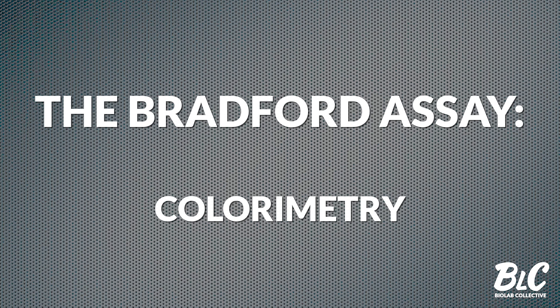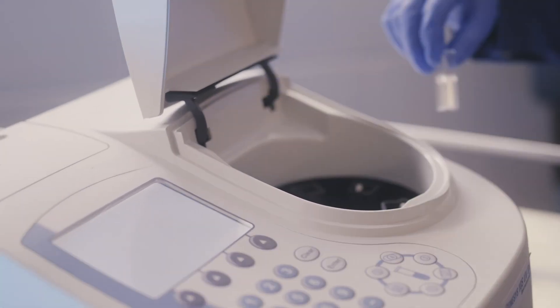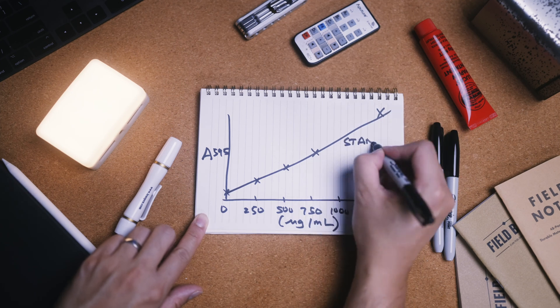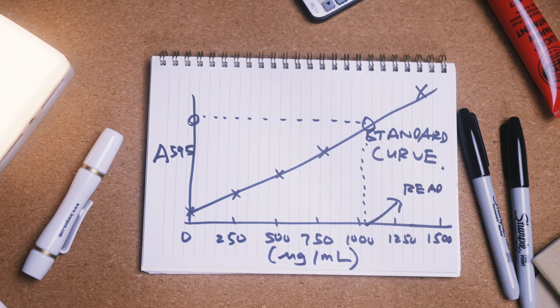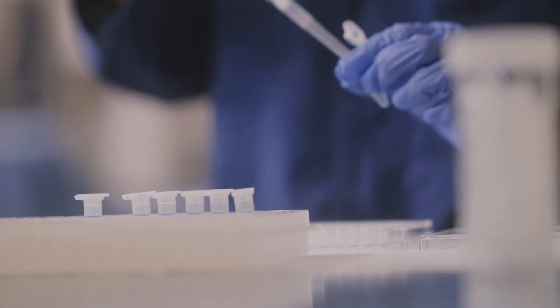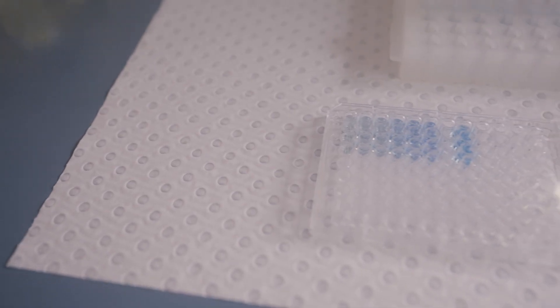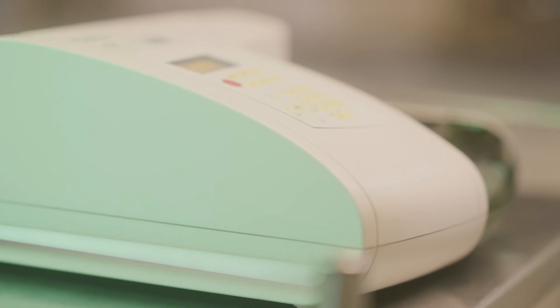At this point we've set up all the reactions in Eppendorf tubes, and to measure the color change we'll need to transfer the liquid to a cuvette and collect the reading using a spectrophotometer. For this assay we can measure the color change at around 595 nanometers and repeat this for each sample with known protein concentration. When you plot this out for all of the known samples, a standard curve is created that can convert absorbance values of the color change into protein concentration. You can of course work with smaller volumes of the same samples on a 96-well plate and use a plate reader to obtain all the readings in one go.